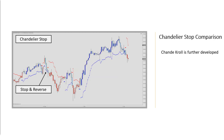You can consider the Chande Kroll a further development of the Chandelier Stop. The Chandelier, which we see here, is either-or — it's long or short, up or down, stop and reverse, with no in between. The Chande Kroll obviously adds more texture to that picture with the fill area between the stop lines to distinguish between trend and sideways scenarios.